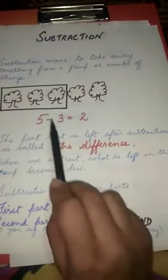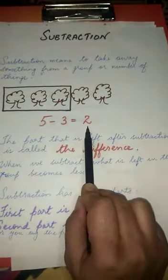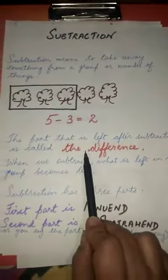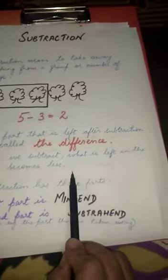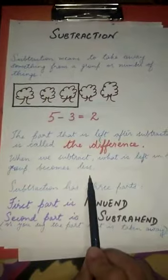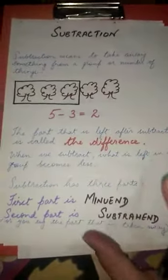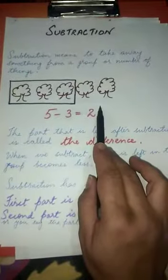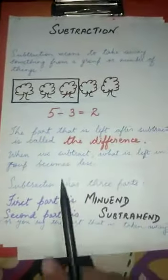The part that is left after subtraction is called the difference. That means after subtraction — 5 minus 3 — the answer we get is 2, and 2 is the difference. When we subtract, what is left in the group becomes less. Earlier it was a group of 5 trees; now only 2 trees are left.